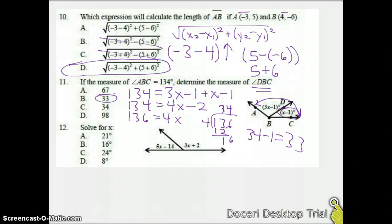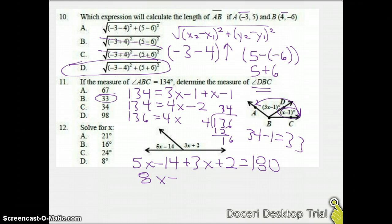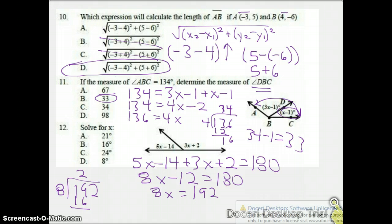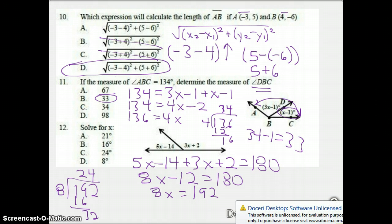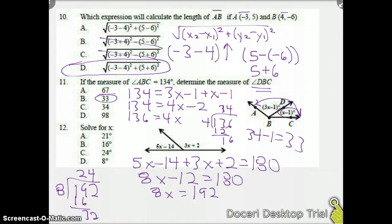Number 12. We need to solve for X. If I look at those two angles, they are supplementary. They form a straight line together or a straight angle. So I'm going to say 5X minus 14 plus 3X plus 2 equals 180. 8X minus 12 equals 180. We get 8X equals 192. If I do 192 divided by 8, we get an answer of 24. We stop. We make sure we don't have to plug it back in. It looks like we're clear. So it's going to be an answer of 24.